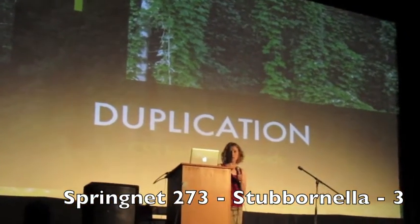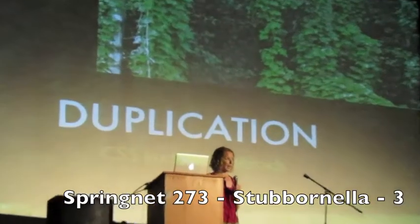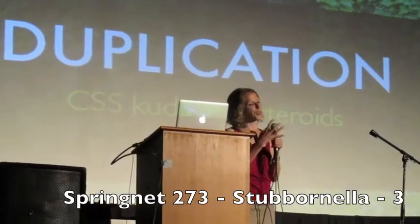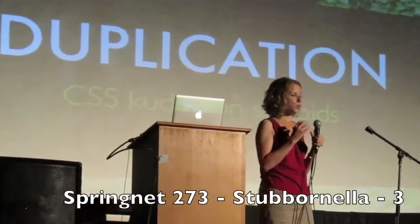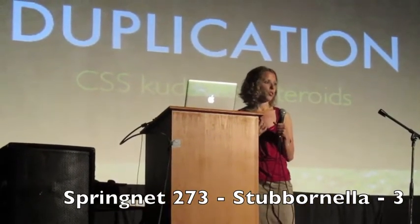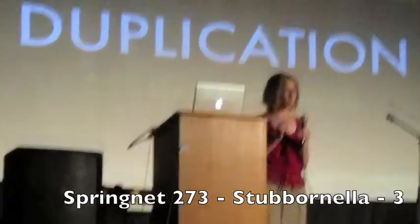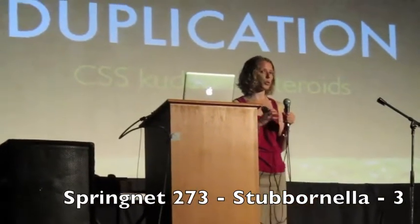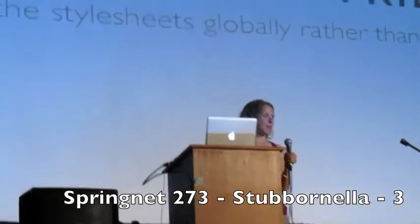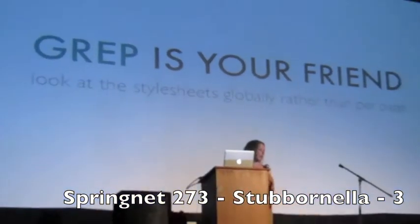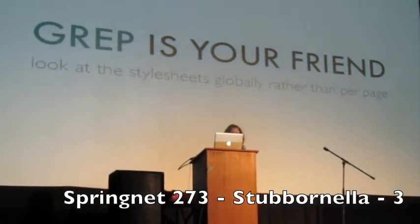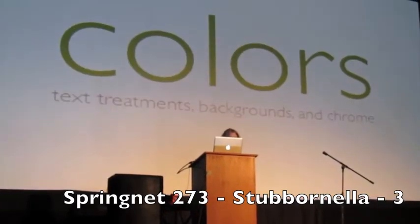The best and most important rule is to avoid duplication. All the other rules kind of feed into this — all the other parts of the equation that end up creating massive CSS feed into a lot of duplication. But it's great because this is where you're going to get data that shows you how your site has grown and what fixes you need. First up, grep is your friend. It's a really great, fast, and easy way to figure out in what ways your style sheet has grown and what kind of fixes you need. You can grep for colors — text treatments, backgrounds, chrome.